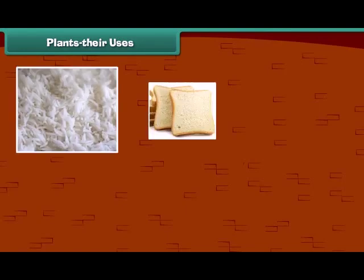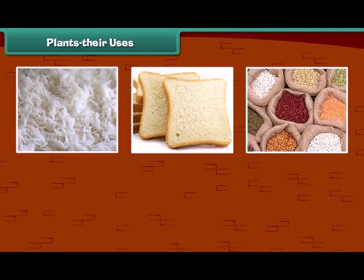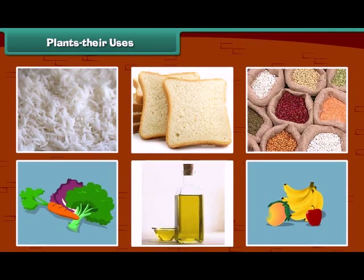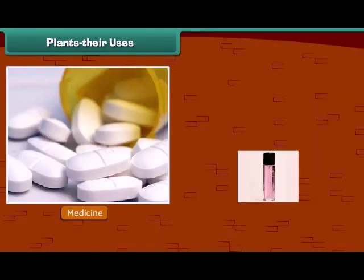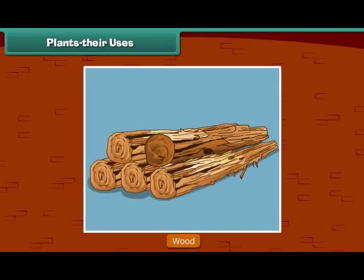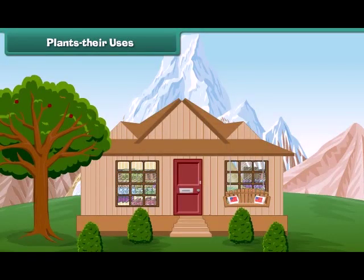We know that we get our food items from the plants. Besides the food items, we also get many other things from plants. Many medicines and perfumes are made from plants. Plants also give us wood. In some places, houses are made up of wood.